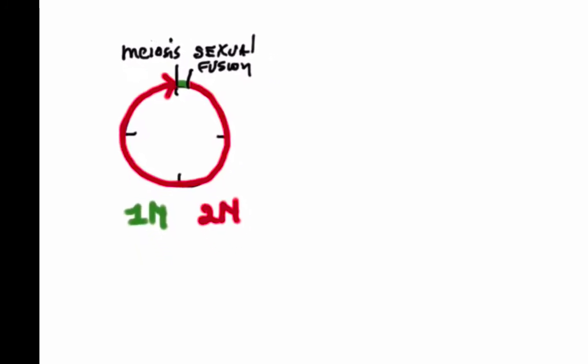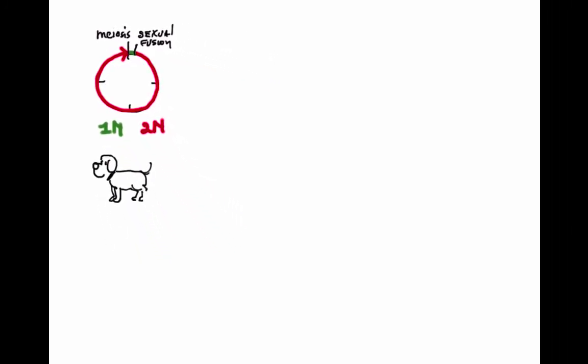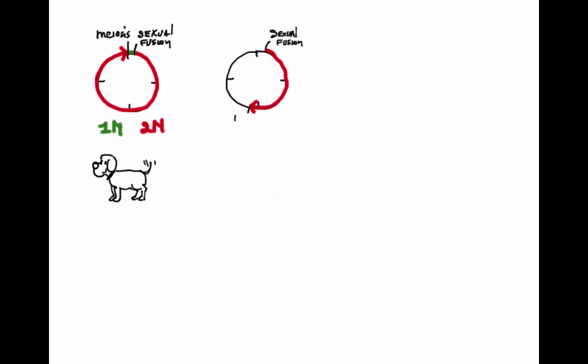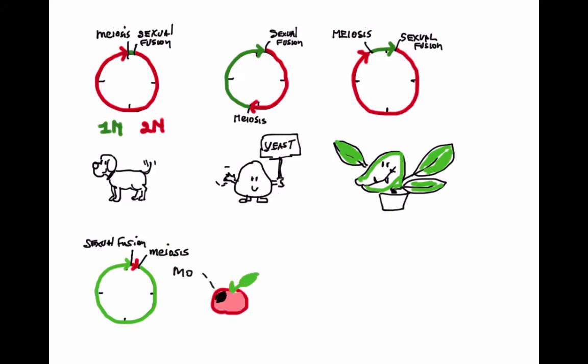The first life cycle is that of a vertebrate, in this case, the dog. The next life cycle is the one of beer yeast. The third cycle is the one of higher plants. Last is a cycle of a mold, a fungus.